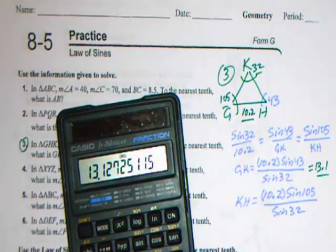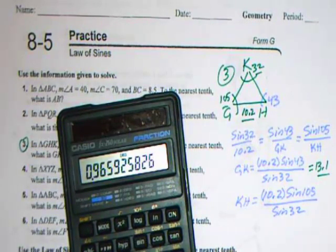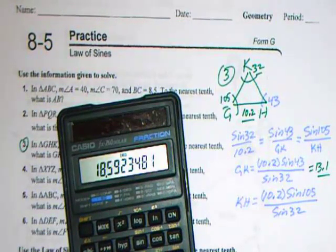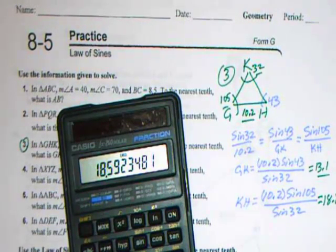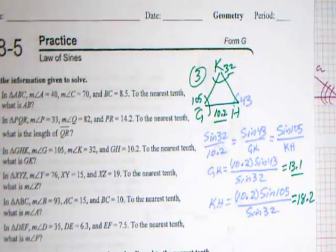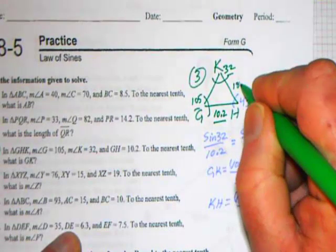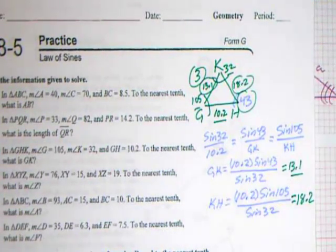Let's find KH. 10.2 times the sine of 105 divided by sine of 32. I get 18.59, which rounds off to 18.6 to the tenths place. So we've completely solved this triangle. We found out that H was 43, KH is 18.2, and GK is 13.1. That's what's going on with number 3.